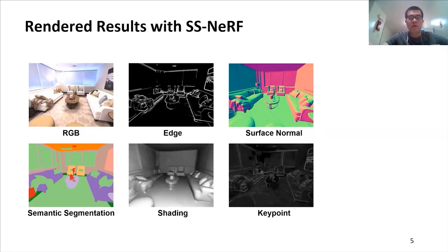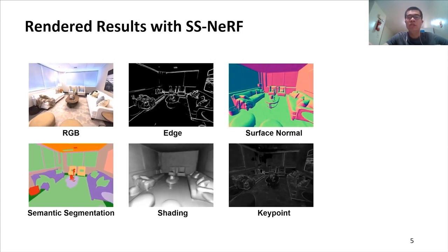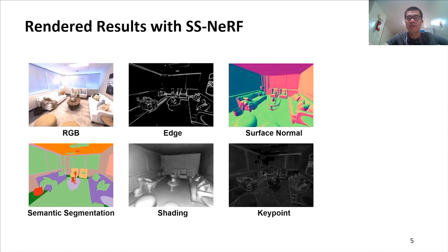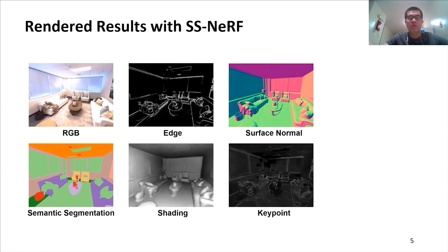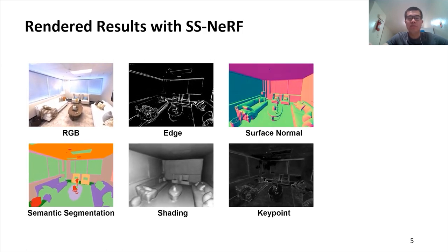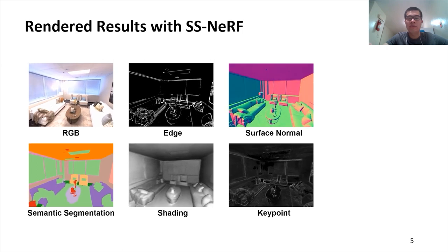Here we show a video of our synthesized results with all 5 scene properties: semantic labels, surface normal, shading, key point, and edge. Our SSNRF model produces good rendering of RGB along with other scene properties when the view direction changes.